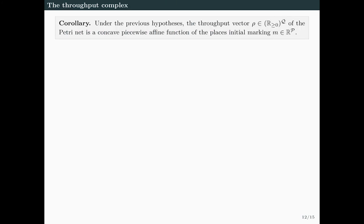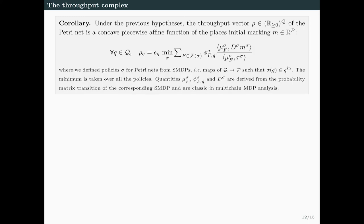Another important and practical result is that, under previous hypotheses, the throughput vector ρ of the Petri net is a concave piecewise defined function of the places' initial marking M. We can state this using an explicit formula with usual objects of multi-chain MDP analysis. Remark how ρQ appears to be the minimum of a sum of linear expressions in terms of the initial marking M.